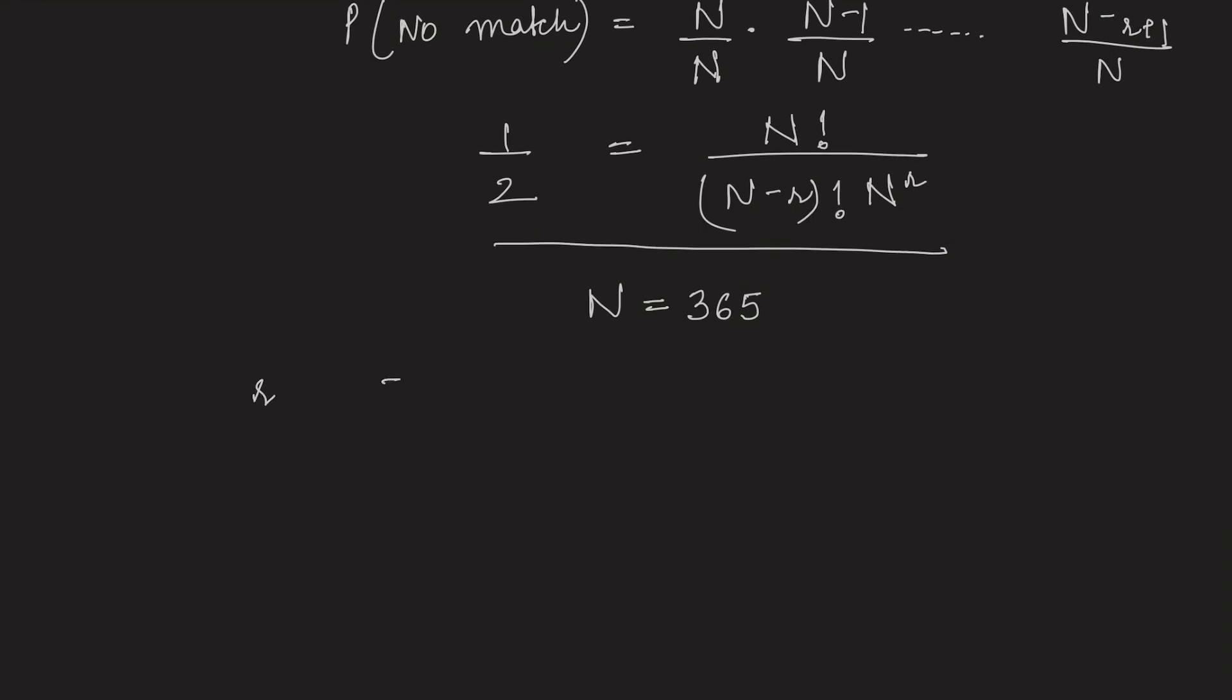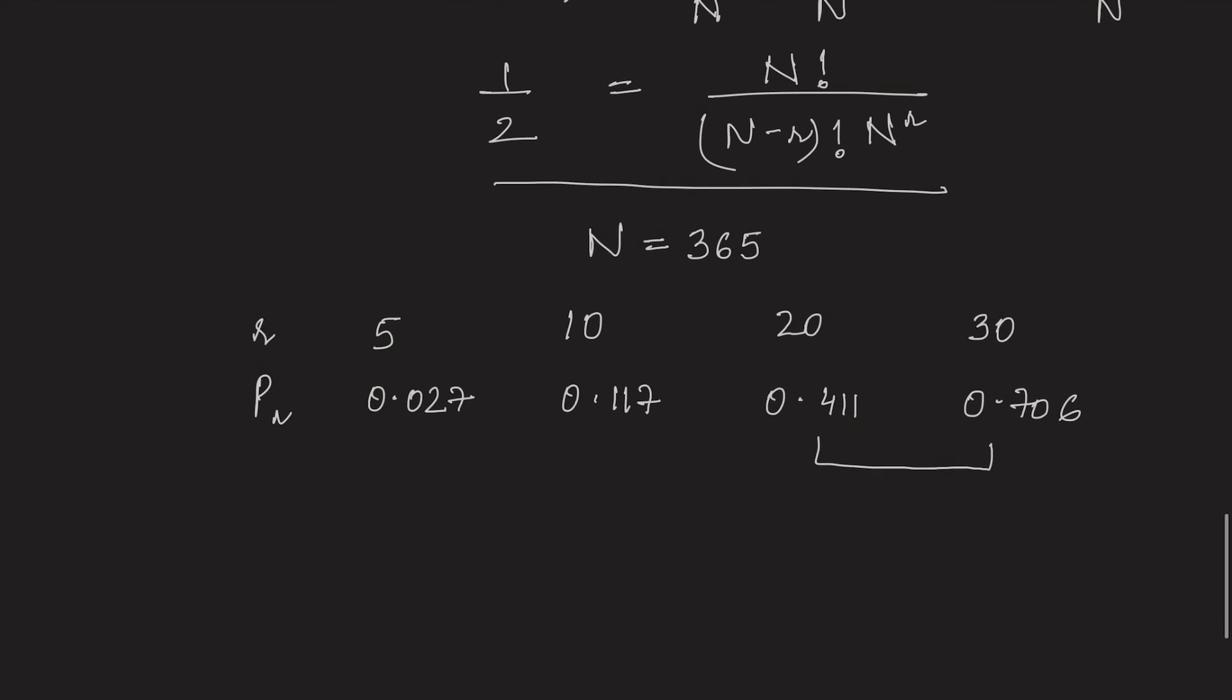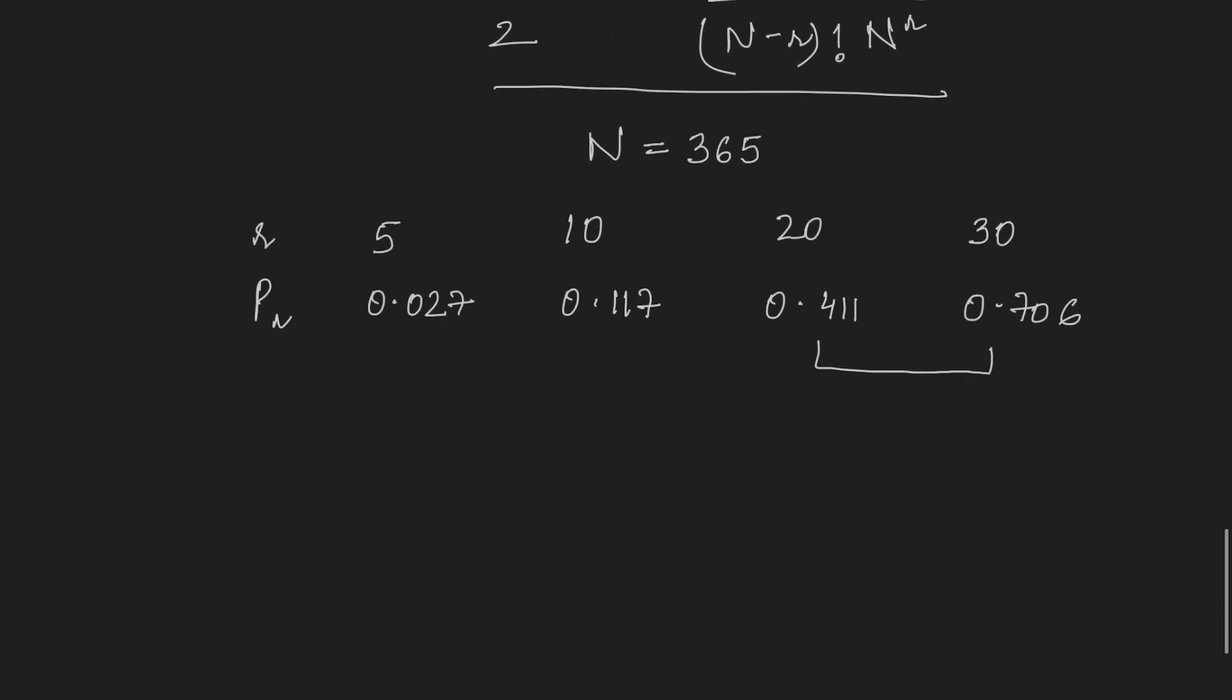For r equals to 5, the probability comes out to be 0.027, for r equals to 10, the probability is 0.117, for r equals to 20, it is 0.411, and for r equals to 30, it is 0.706. We can see in the range between 20 to 30, there must be a number at which pr equals to 0.5. So, we have to find that number.